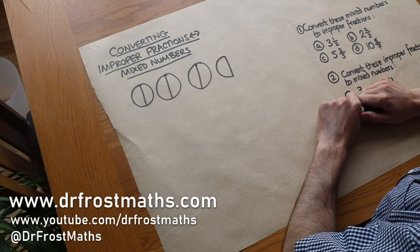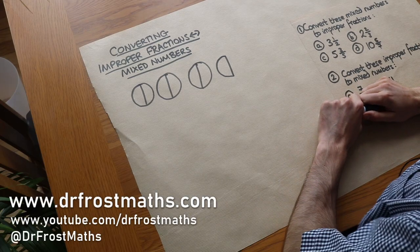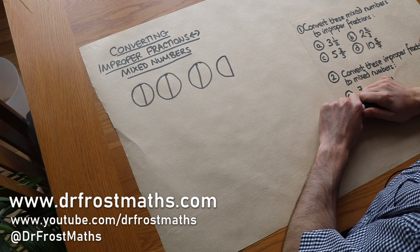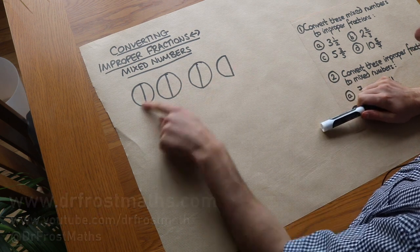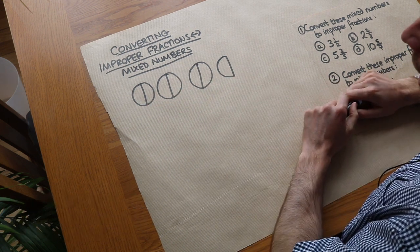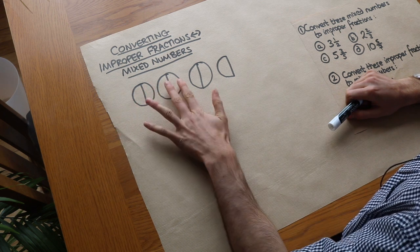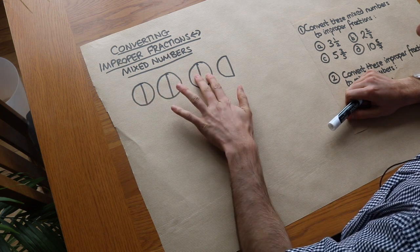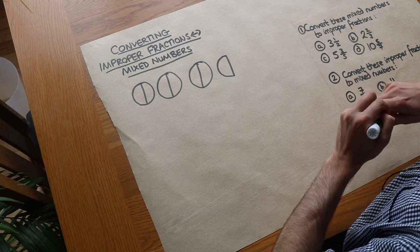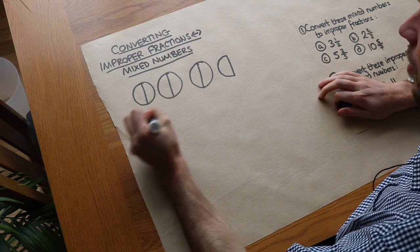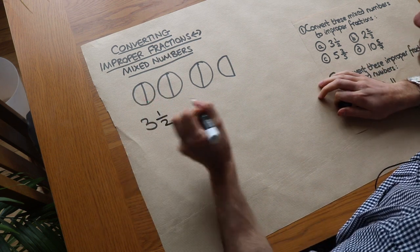Hello and welcome to this video on converting between improper fractions and mixed numbers. Now let's just say we've got some pizzas here. How many pizzas do we have? Well, we've got one whole pizza, two whole pizzas, three whole pizzas and an extra half a pizza. So we can see that we have three and a half pizzas.